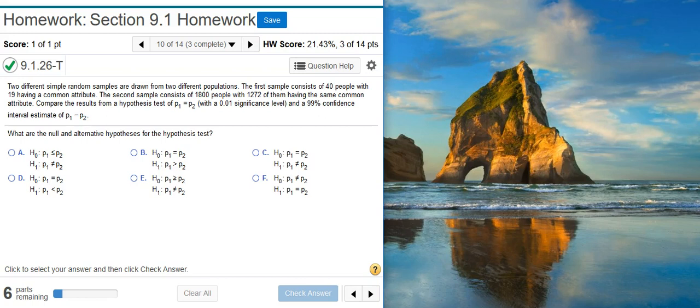Here's our problem statement. Two different simple random samples are drawn from two different populations. The first sample consists of 40 people with 19 having a common attribute. The second sample consists of 1,800 people with 1,272 of them having the same common attribute. Compare the results from a hypothesis test of p1 equals p2 with a 1% significance level and a 99% confidence interval estimate of p1 minus p2.